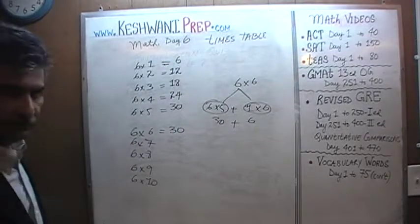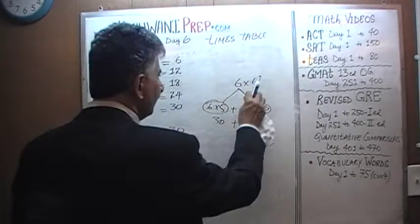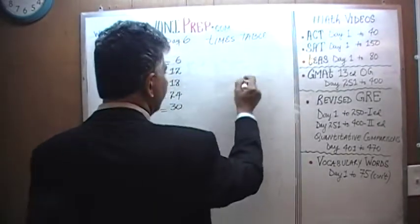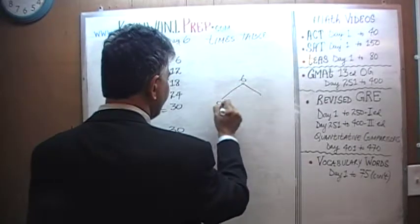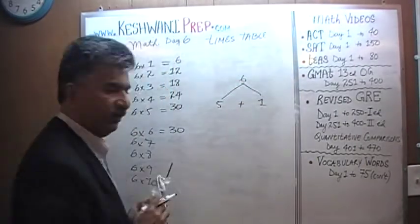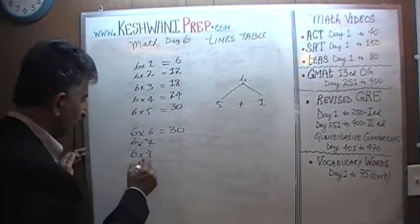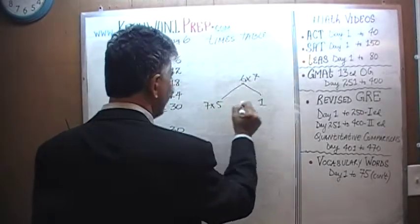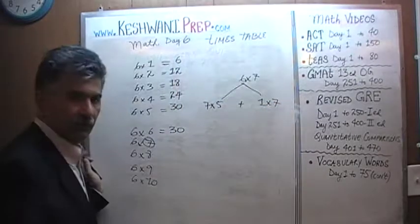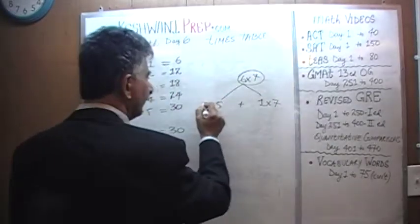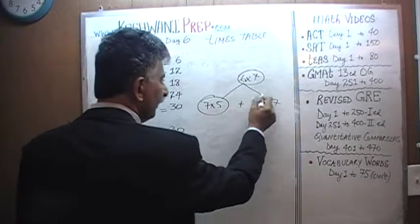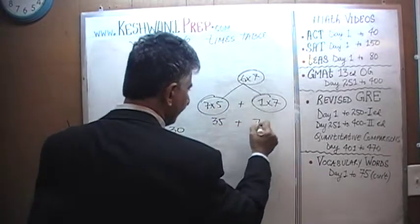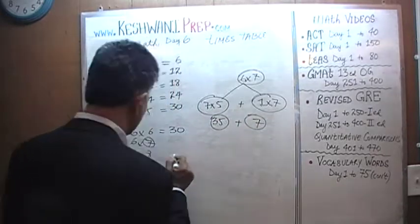Similarly, when we have six sevens, take the six and break it up into five and one. How many do we have? We have seven of them. So six sevens are the same as five sevens and one seven. Five sevens are thirty-five, and one seven is seven. Thirty-five plus seven is going to be forty-two.